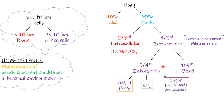Interstitial fluid also contains carbon dioxide, sugar, fatty acids, and amino acids. Returning to homeostasis — which is the maintenance of nearly constant conditions in the internal environment — this means that ions, carbon dioxide, oxygen, sugar, fatty acids, and amino acids must all be maintained in a balanced state. If they are kept at a nearly constant level, homeostasis is working perfectly.